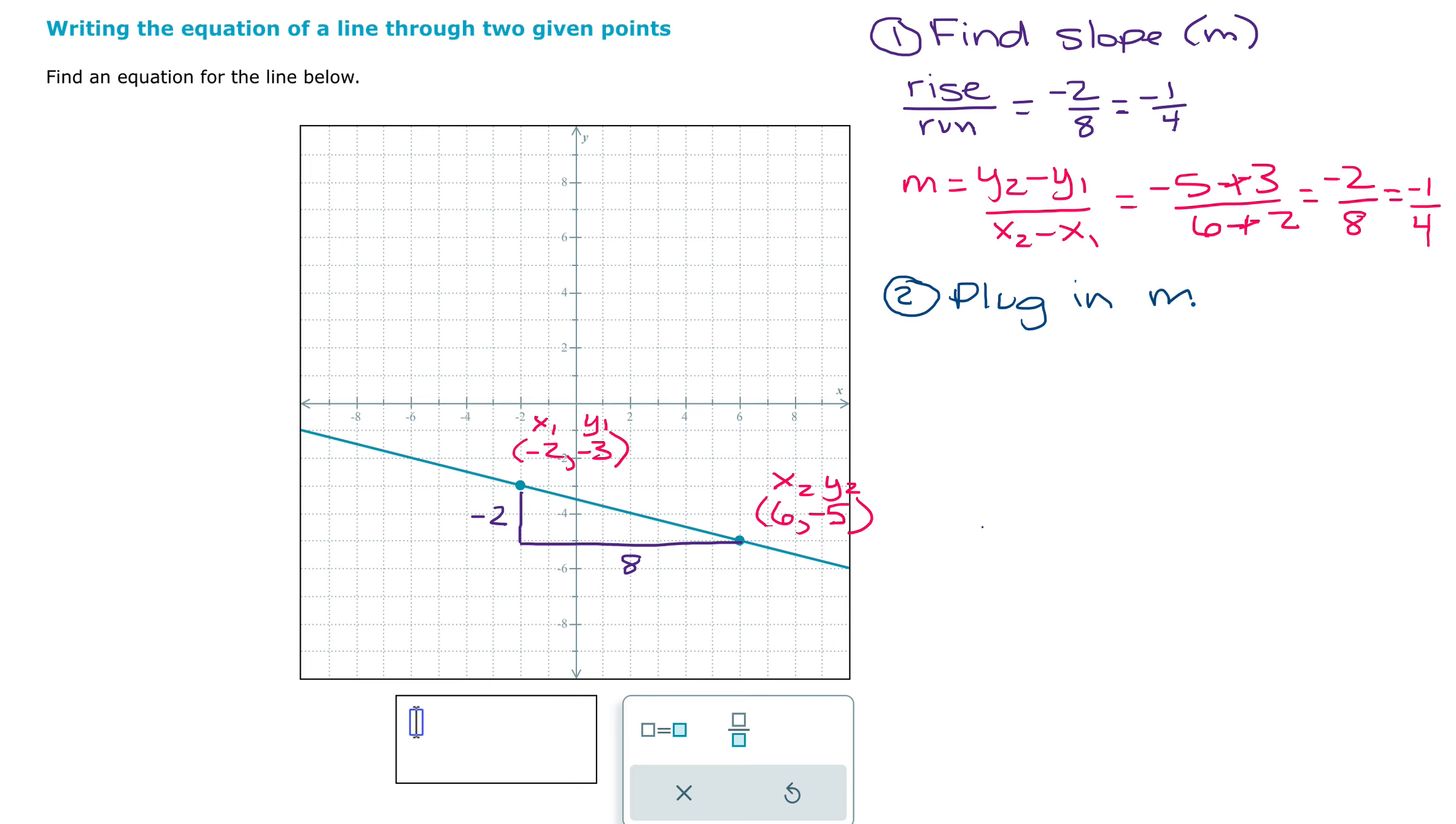Now my next step to solving the problem is to plug in the slope, m, and a point into y equals mx plus b. So I can choose either of my two labeled points to plug in. I'll go with the x1, y1 point. So I'm going to plug in y, negative three.